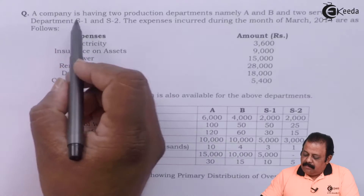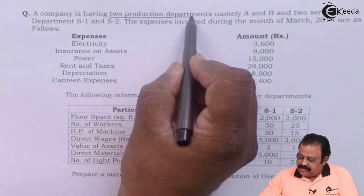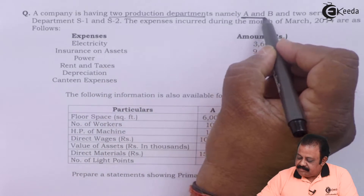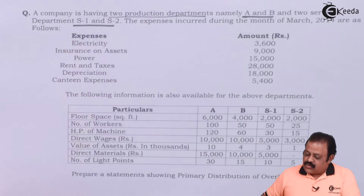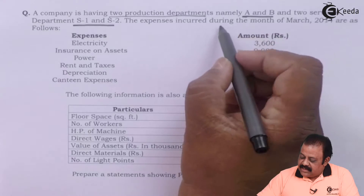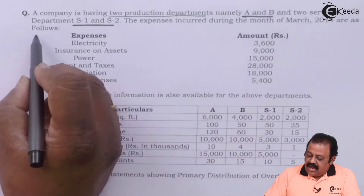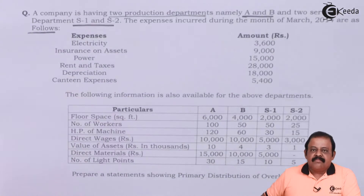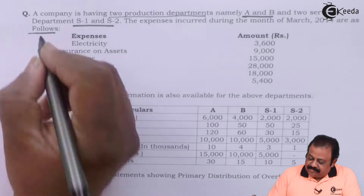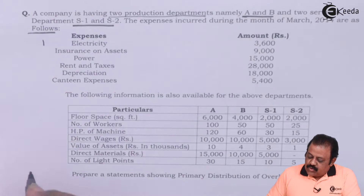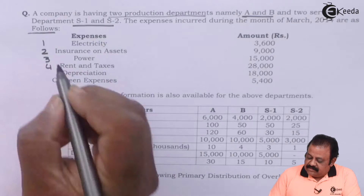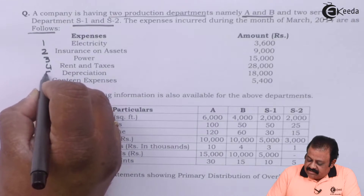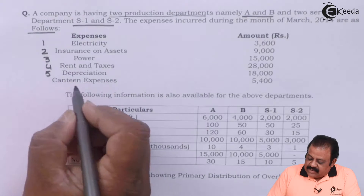A company is having two production departments A and B, and two service departments S1 and S2. The expenses incurred during the month of March 2014 are as follows: electricity, insurance of assets, power, rent and taxes, depreciation, and canteen expenses.